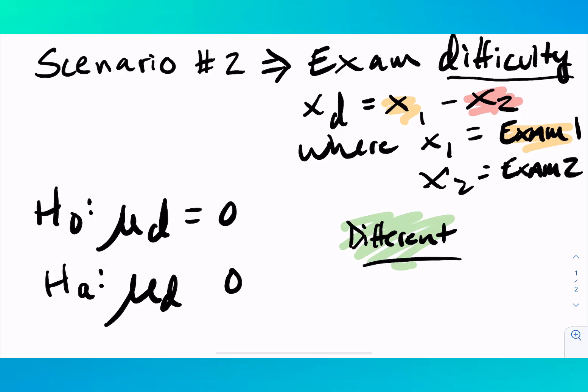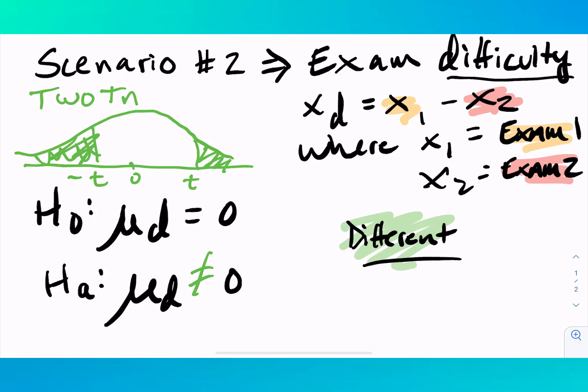When you're saying is there a difference, that means you're not specifying a direction, which means you just want to see if there's some numeric difference. So we want to see if it's not equal to zero. So that means it could be that exam one is greater or it could be that exam one is less, or in other words, exam two is less or exam two is greater. So that means you would do both sides of the curve, which we call a two tail test.